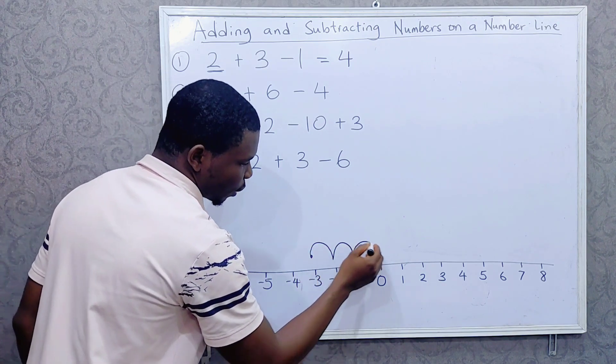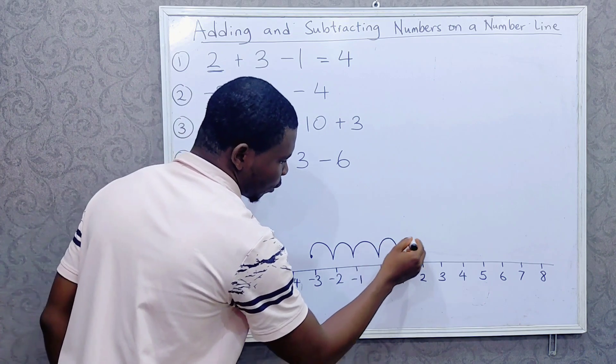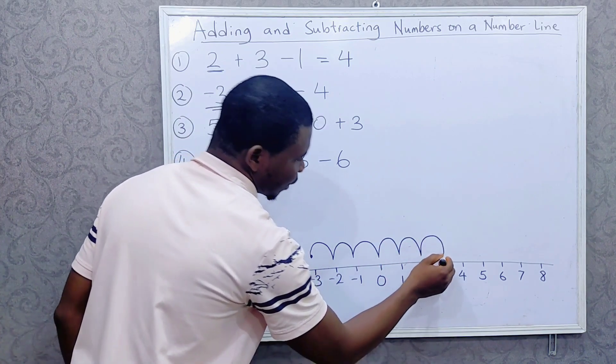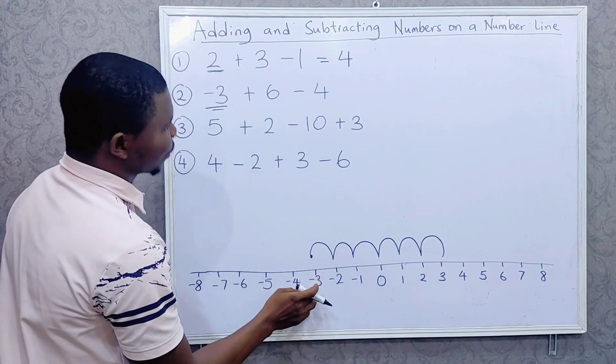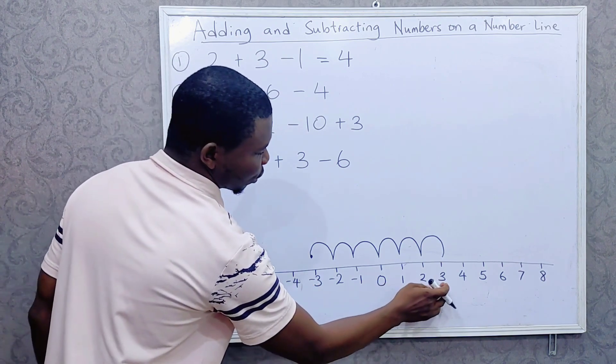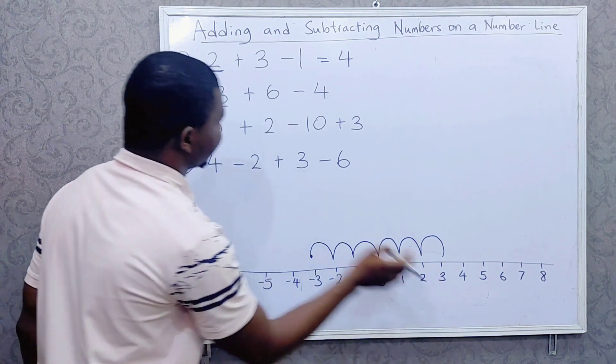1, 2, 3, 4, 5, 6. So it means minus 3 plus 6 is equal to positive 3.